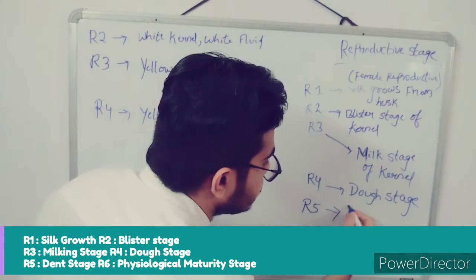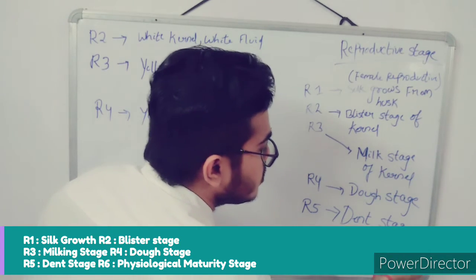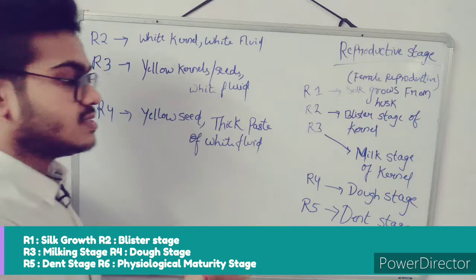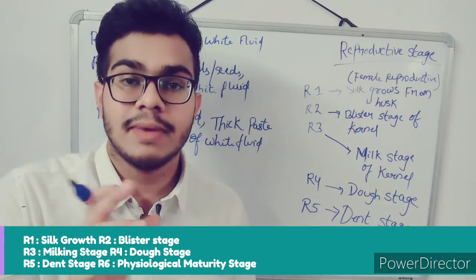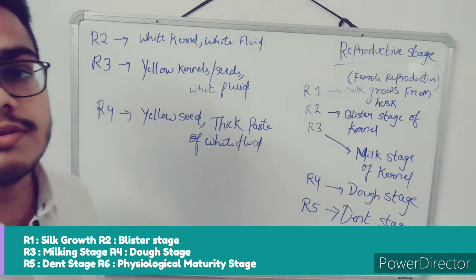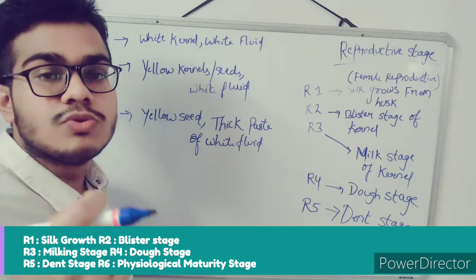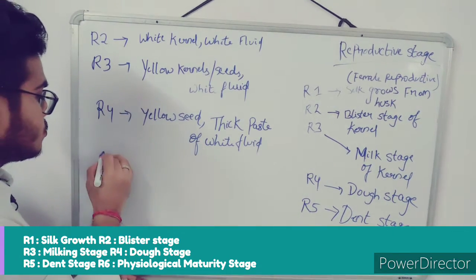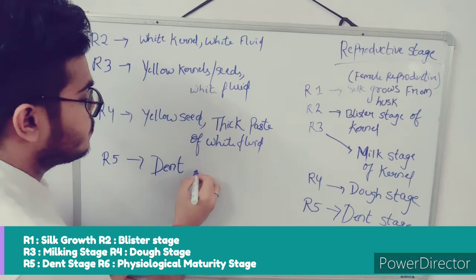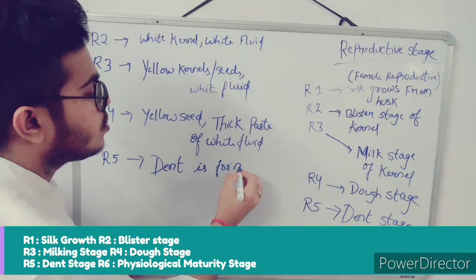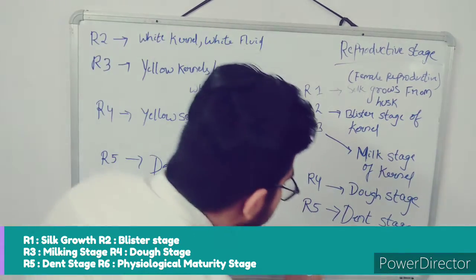R5 is the dent stage. A dent is formed on the kernel because the plant has attained its maximum dry weight at this stage. The white fluid turns into a sticky layer, and the dent forms on the seed surface. This is the dent corn that we consume regularly.